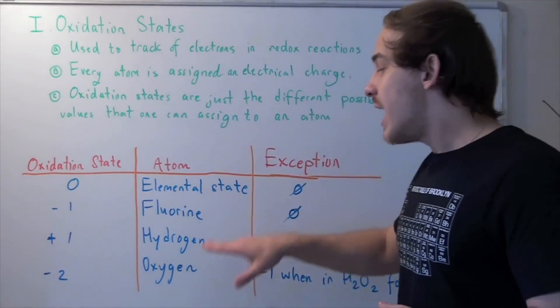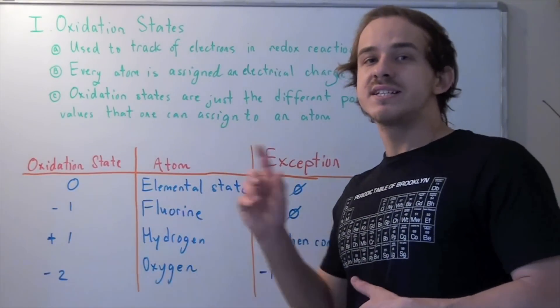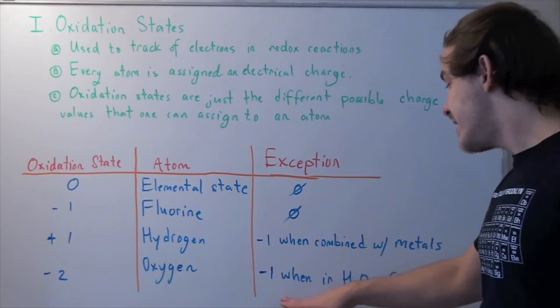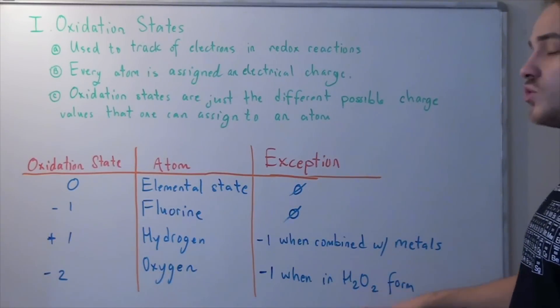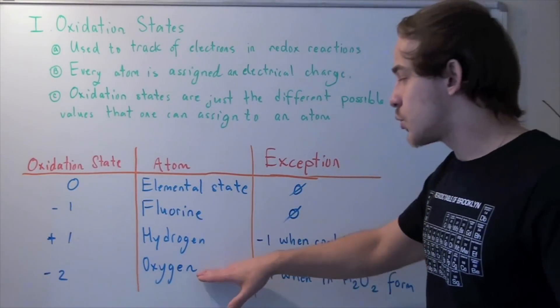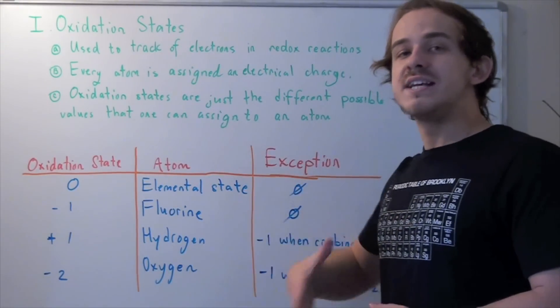The atom oxygen is given the oxidation state of negative two, but there's an exception. It's given the oxidation state of negative one when combined in the form H2O2. That's because this rule is more important than this rule. On this table, every rule that comes before it is more important.